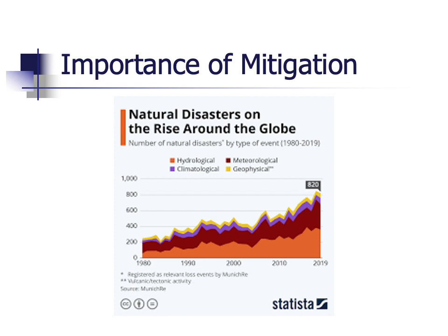Mitigation is extremely important, and we need to be far more proactive in emergency management than we have been in the past. Disasters and their impacts are in many ways more frequent and worse now, as E.L. Quarantelli, the famous disaster sociologist, noted many years ago. We need to do more to prevent them, reduce their probability, and minimize their consequences to save lives, property, and the environment. Let me share a few quotes that illustrate this.